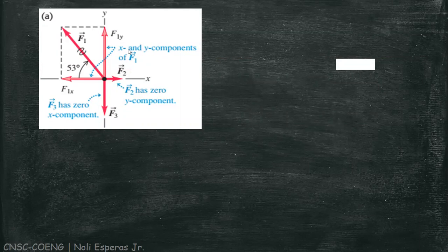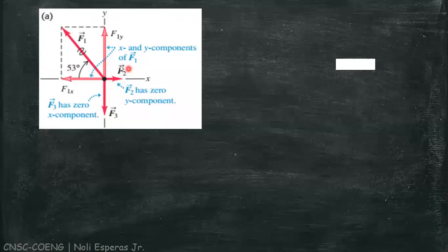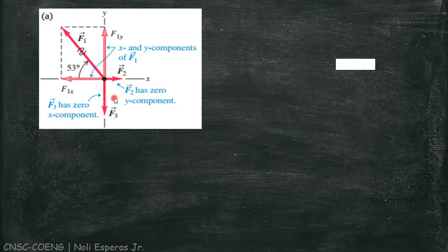This is our illustration of the three forces of the wrestlers. We have F1 here, and F2 and F3. By the way, this is the top view of our illustration or the forces acting on the champion belt.